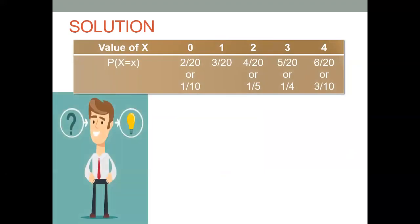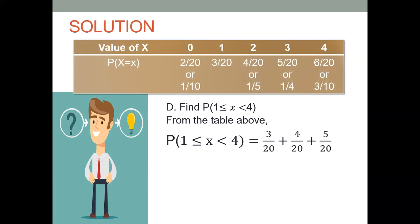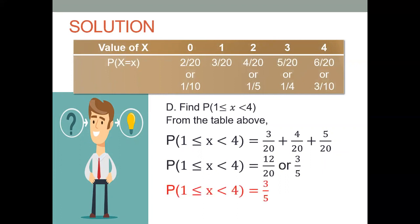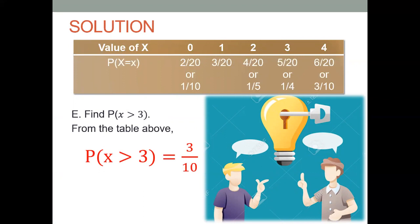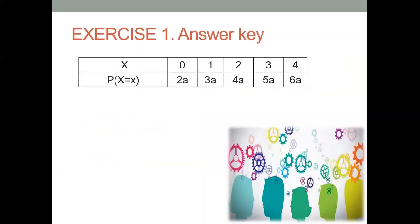For the fourth question, find the probability that x is greater than or equal to 1 but less than 4. From the table, x equals 1, 2, and 3, so we add 3 over 20 plus 4 over 20 plus 5 over 20, giving 12 over 20. In lowest terms, the answer is 3 over 5. The last question: find the probability that x is greater than 3. In the table, the only value greater than 3 is 4, so the probability of x greater than 3 is 3 over 10.